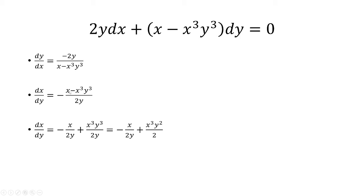The first fraction is going to have numerator x. The second fraction is going to have numerator x cubed y cubed. But this negative is going to apply to both the x and the negative x cubed y cubed, so the two negatives are going to cancel, giving me a positive.